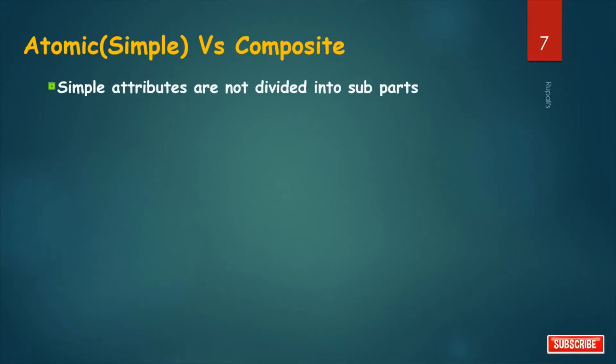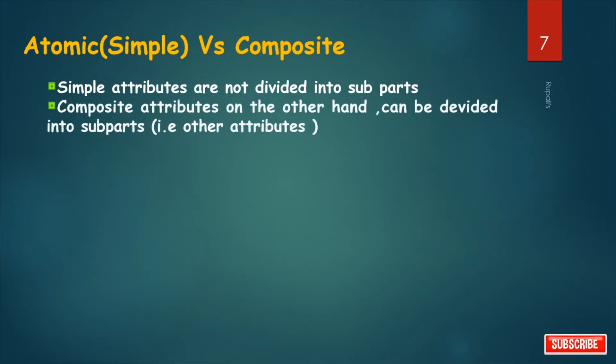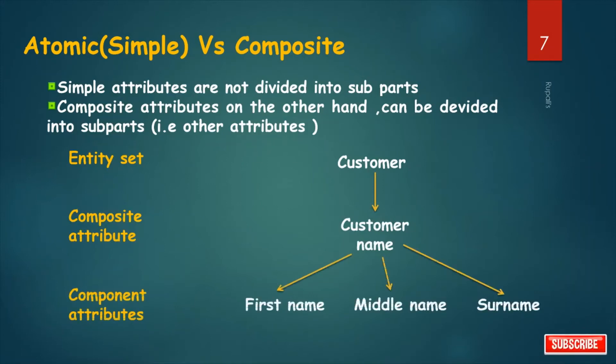Atomic or simple versus composite attribute. Simple attributes are not divided into subparts. But composite attributes, on the other hand, can be divided into subparts, that is other attributes. So an attribute that is a combination of other attributes is known as composite attribute. For example, in student entity, the student address is a composite attribute as an address is composed of other attributes such as pin code, state, country, etc. Take another example. If the entity set is customer, then composite attribute is customer name. Why so? Because it is a combination of simple attributes like first name, middle name, and surname. So these are component attributes.